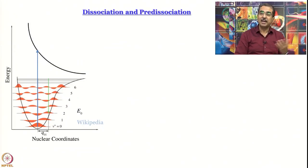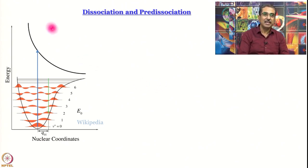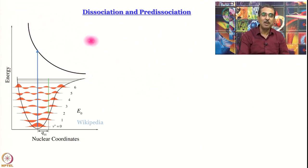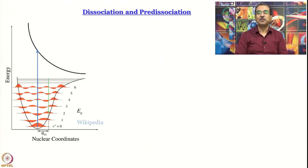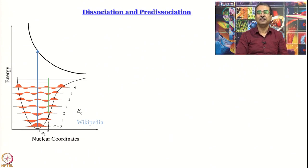We can also consider the other extreme: if the bond length is so large it is close to infinity, we will never reach a minimum — the excited state just falls off exponentially and asymptotically. There will be no vibrational energy levels associated with it because it is an unbound state. This reminds us of the energy of antibonding orbitals. The spectrum will be a continuum all the way with no structure — a transition to a dissociative state. You can cause dissociation even without providing ionization energy.